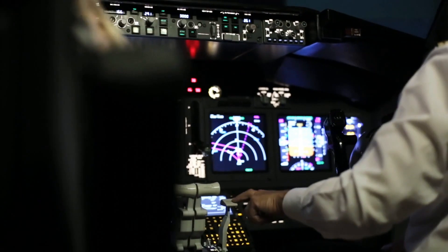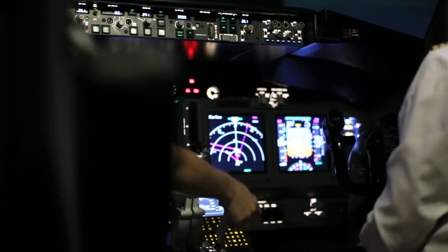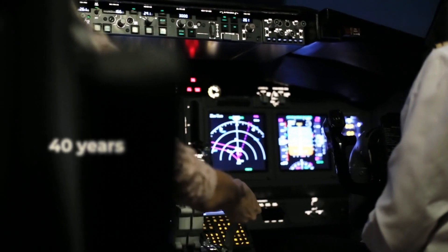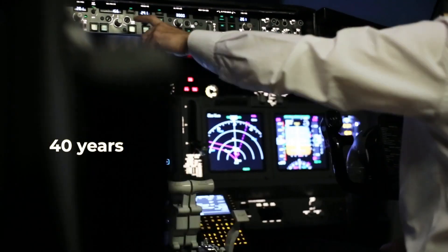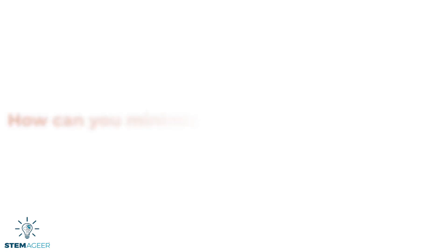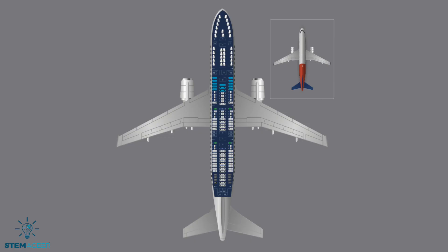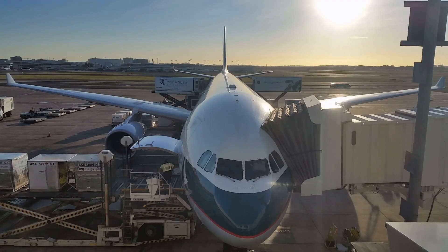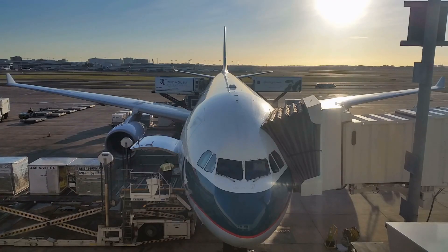Business Insider also noted that turbulence hasn't caused a crash in over 40 years. Question 2: How can you minimize the amount of turbulence you may feel on a flight? Pilots suggest that you sit in the wing section of the aircraft or in the front of the cabin instead of the back. Also, there tends to be less turbulence if you fly in the morning.